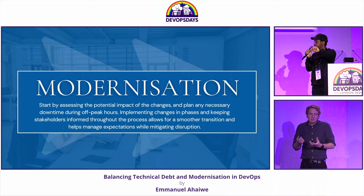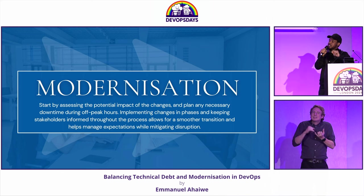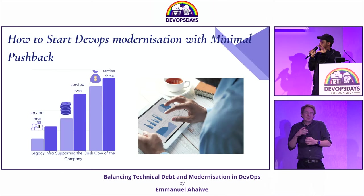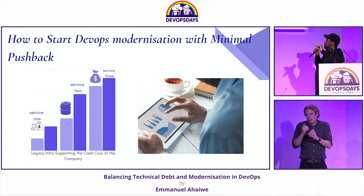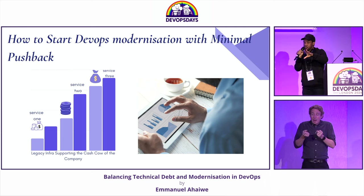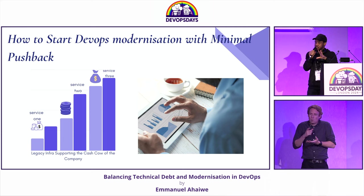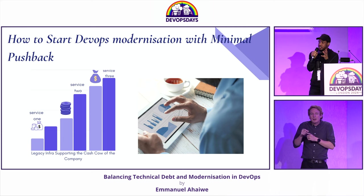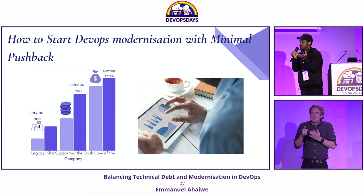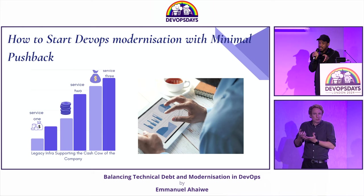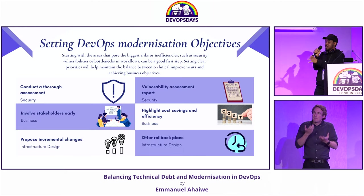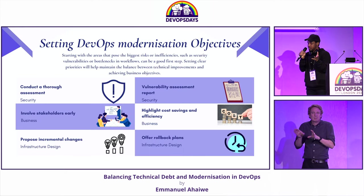There is a technical aspect and a stakeholder aspect to modernizing your infrastructure. Sometimes when you're doing this, you will have pushbacks, because some of these older applications are probably legacy applications that are the cash cow of the company. So you need to find a balance of how to minimize downtime on these applications.